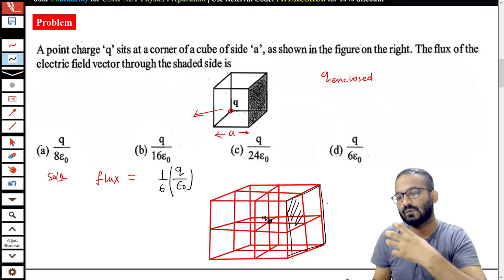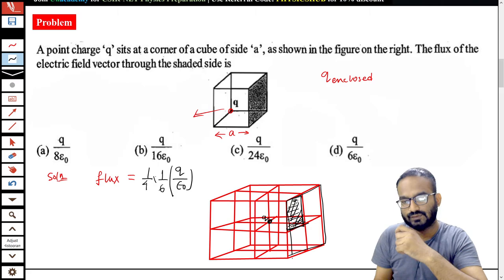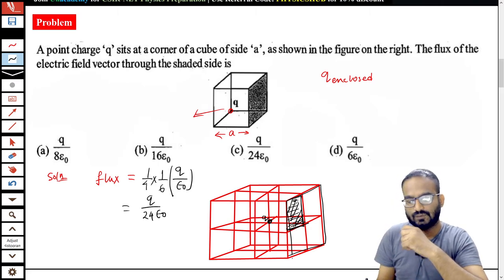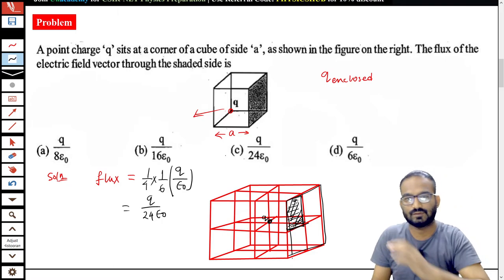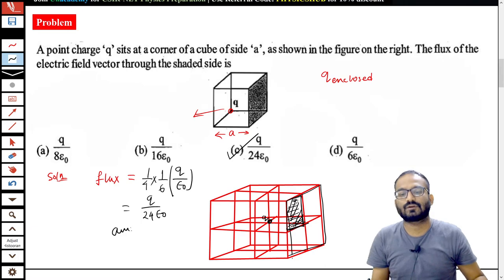Now from this one side, you have to find out 1/4 of this. You have to find out the flux through 1/4 of this side because this face corresponds to this and that is 1/4 of this face. So you have to calculate 1/4 of this. It becomes Q by 24 epsilon naught. And surprisingly, the option is matching with option C. So option C is correct for this question. I hope all of you understood.